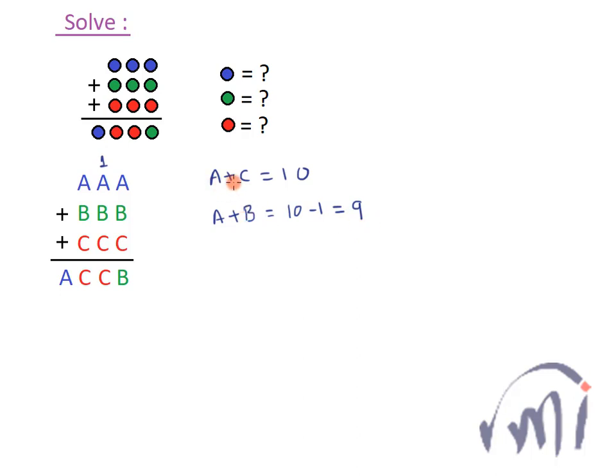So A plus B is 9, A plus C is 10 and if you see the result is a four-digit number. So this A is completely a carry forward after you add these three digits. So this A can either be 1 or this A can be 2. Let me call this as equation number 1 and this one as equation number 2.